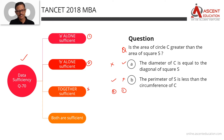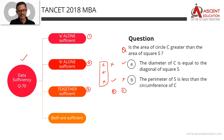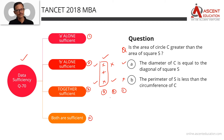If the answer option is 3, that means A alone is not sufficient and B alone is not sufficient, but together they are sufficient, so we go with 3. Lastly, if both A and B are each independently sufficient — A alone is sufficient and B alone is also sufficient — the answer is 4.